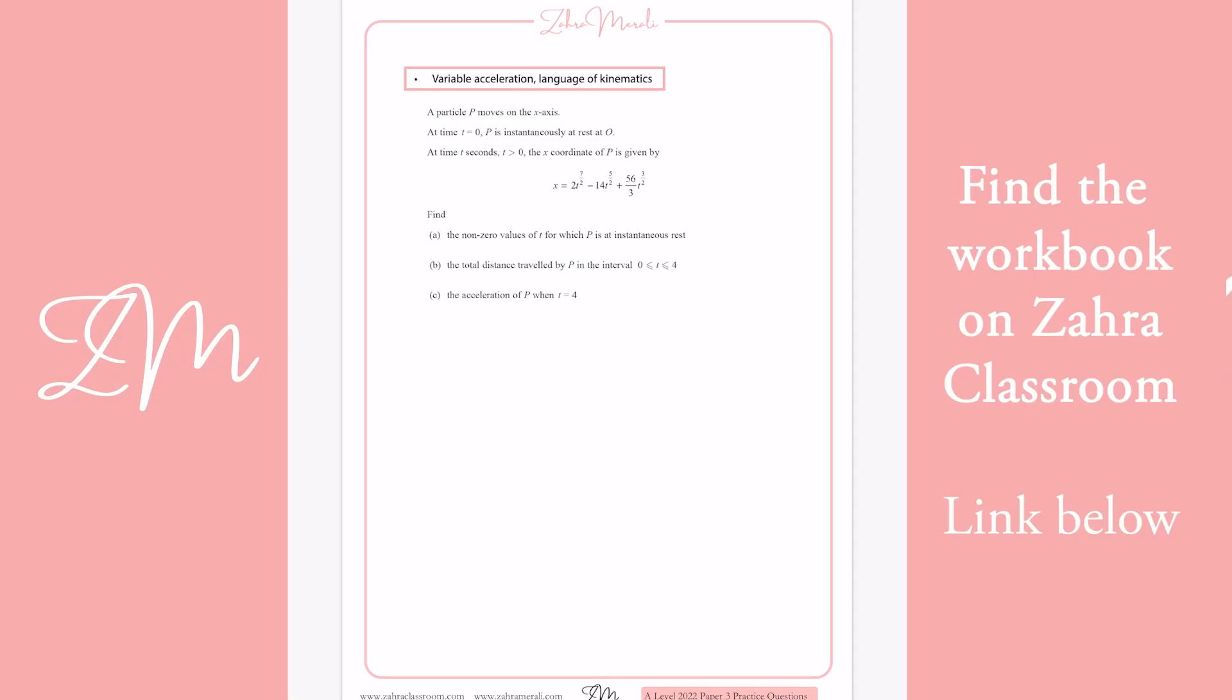A question won't tell you that it's variable acceleration. You're going to have to recognize it because you look at t and it's to all different powers and there's an expression where t is not constant. Normally when it is constant acceleration, it says it's constant.